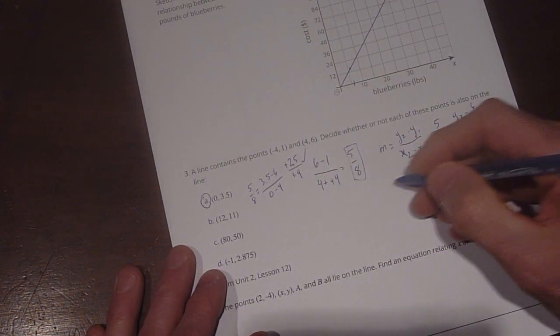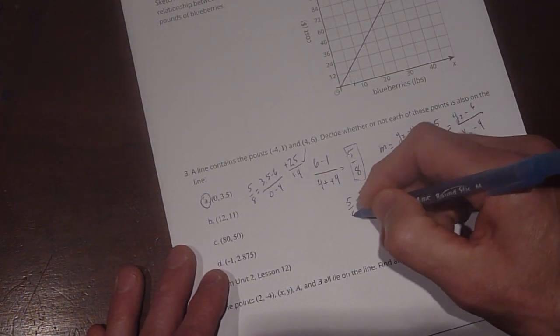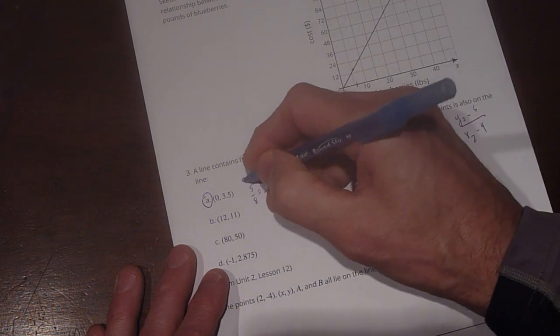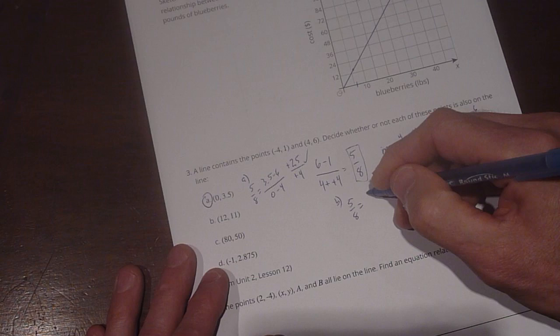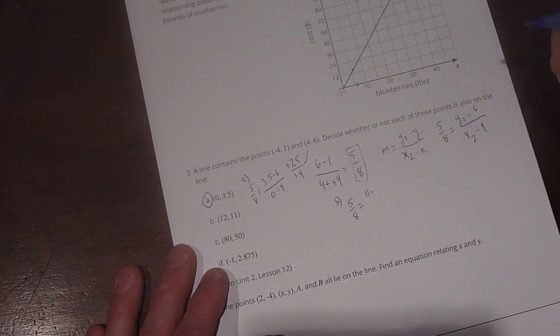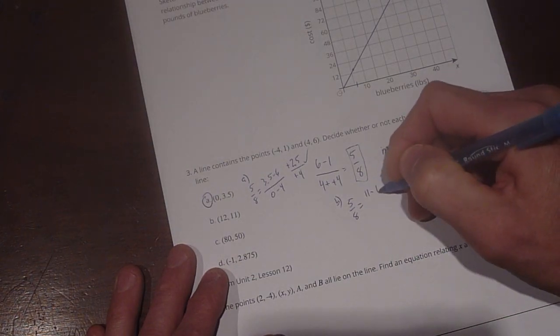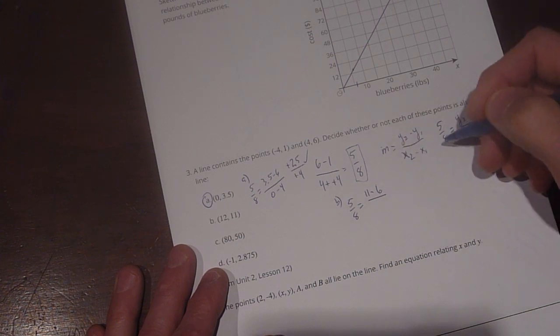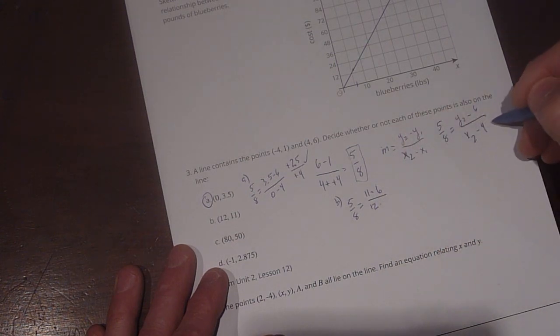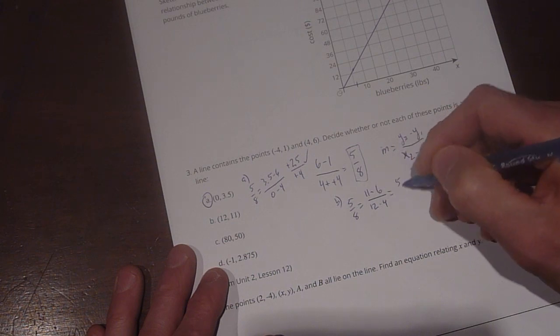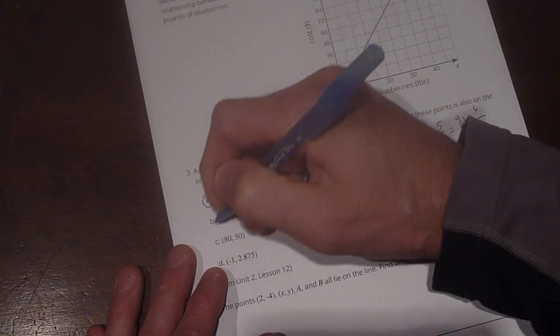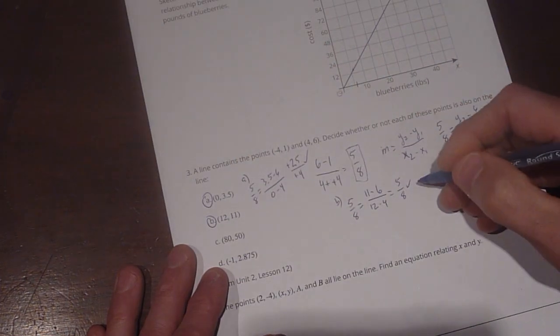We'll come down here for b, and we'll say 5/8 equals, so this was a, and then we'll do b here. 5/8 equals (11 - 6) divided by (12 - 4). Okay, so that's going to equal 11 minus 6 is going to give us 5. 12 minus 4 is 8. So that works out also. (12, 11) is on that line.